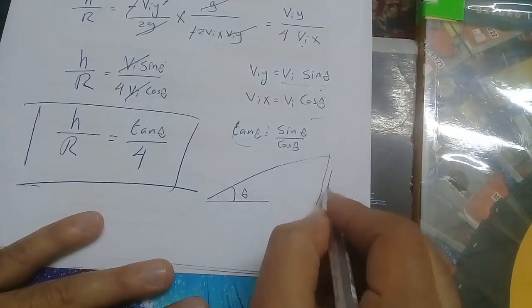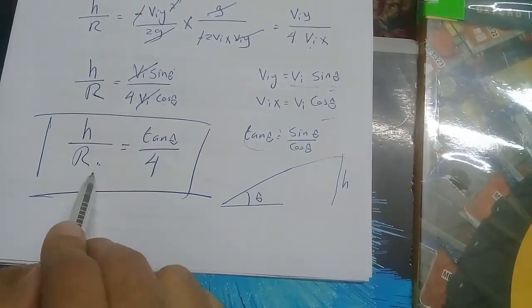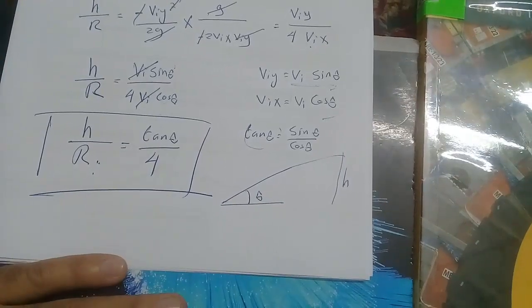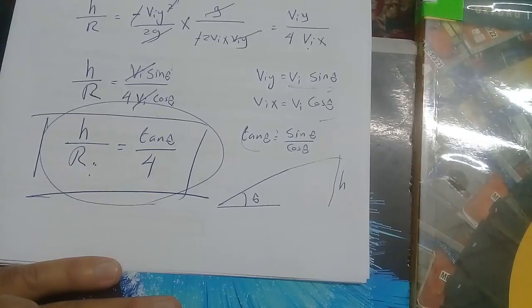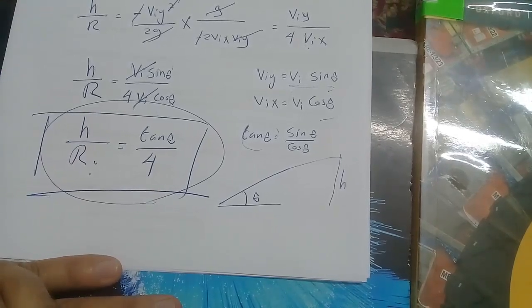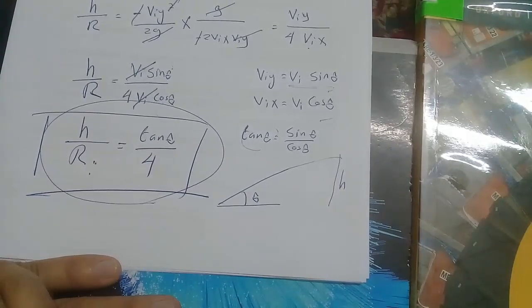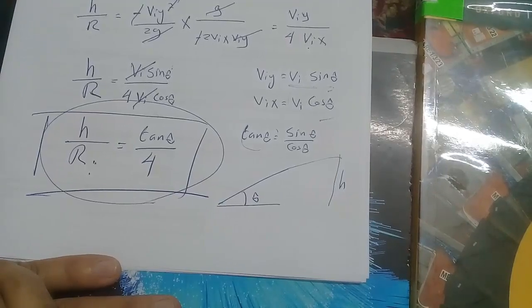So this relation: if you have the angle of the projectile θ and the maximum height reached by the projectile, you can find the horizontal range. This is the relation between them. This formula can be proved by this proof. I hope this video will be useful for you. Please subscribe the channel and make like if you get benefit from this video. Thank you, bye bye.